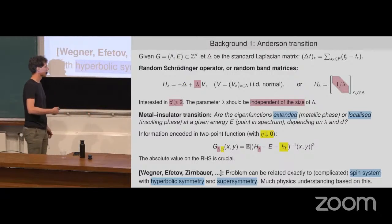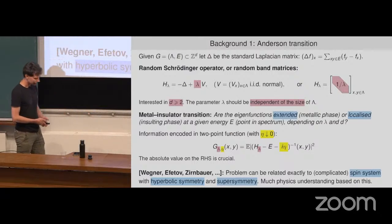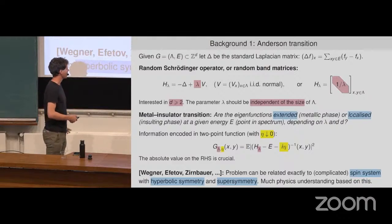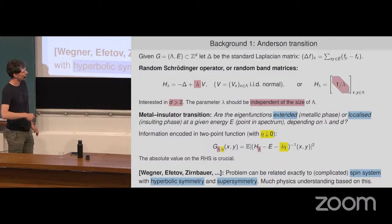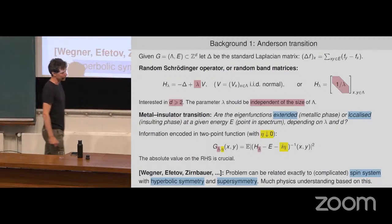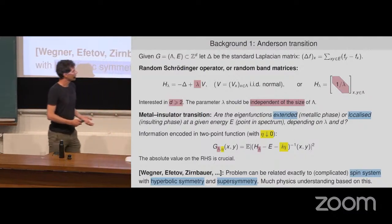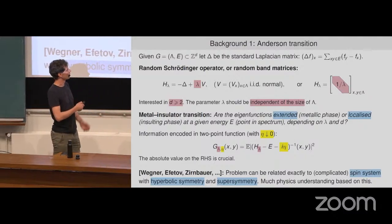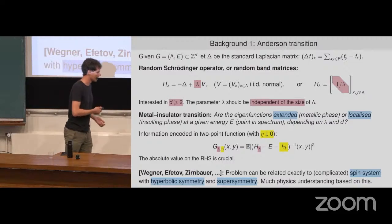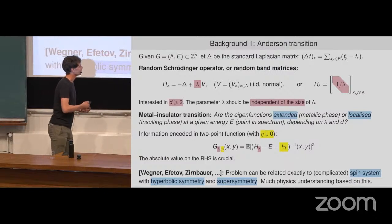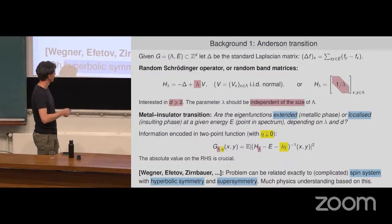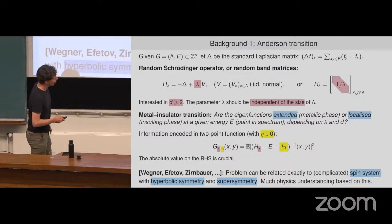Much of the physics understanding is based on this picture because it's a system that kind of looks like problems that physicists have a lot of experience with — these kinds of systems appear in quantum field theory and all sorts of problems in statistical physics. Now what I'll be talking about are models that are motivated by this. They won't exactly describe these models, but they have some of the features that these models have.